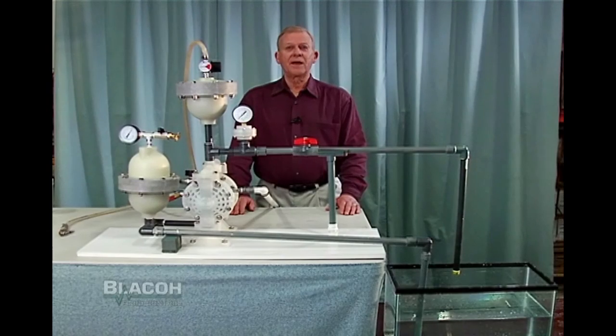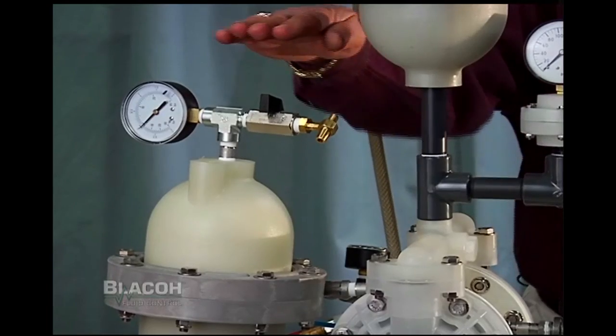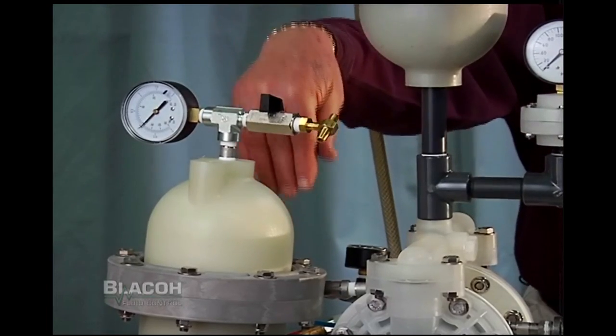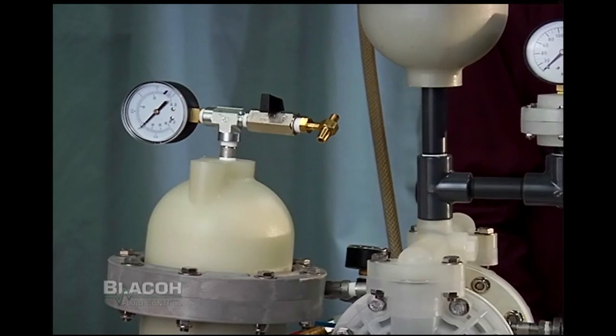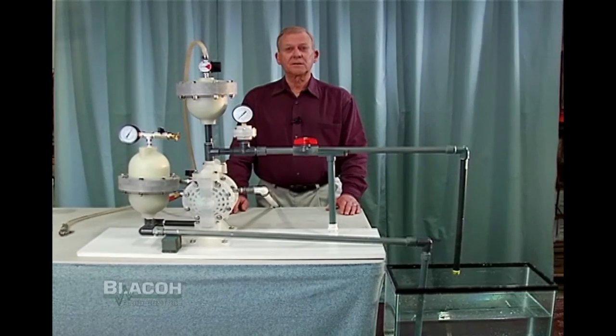On installation, the dampener can be installed horizontally or upside down as pressure is equal in all directions. Vertical is the preference, especially with a slurry or a solids-laden product.